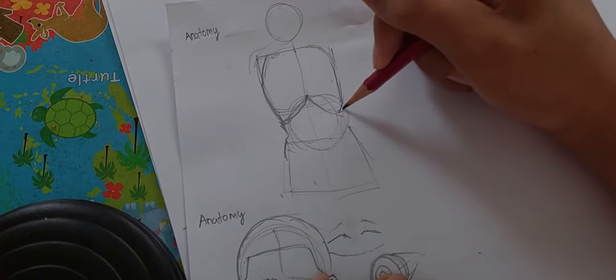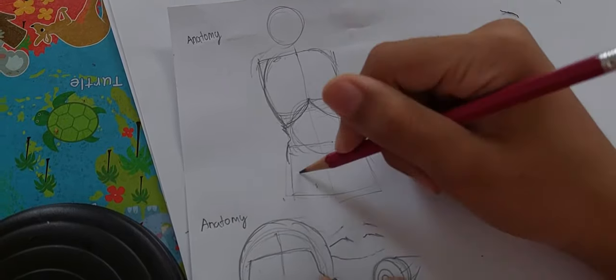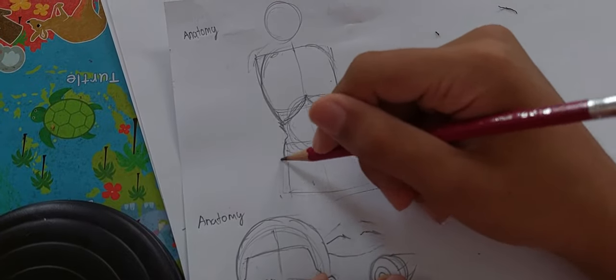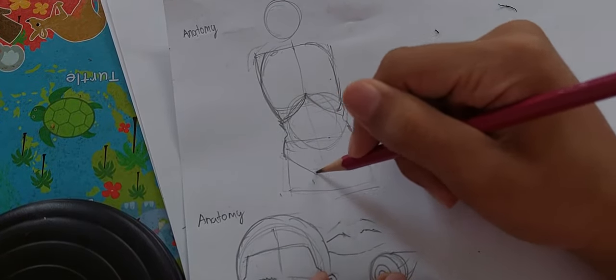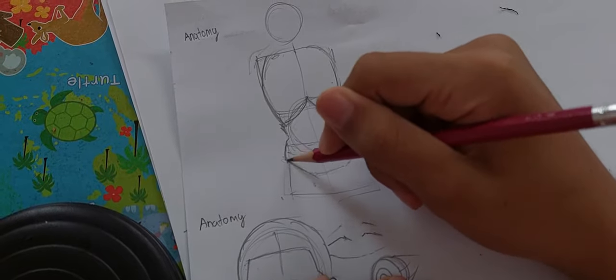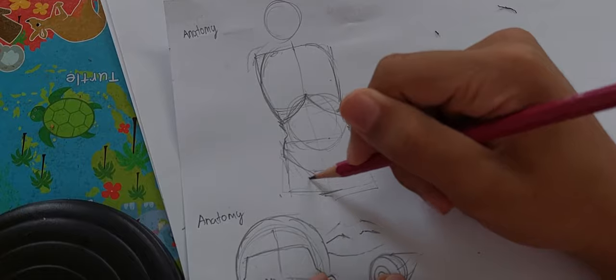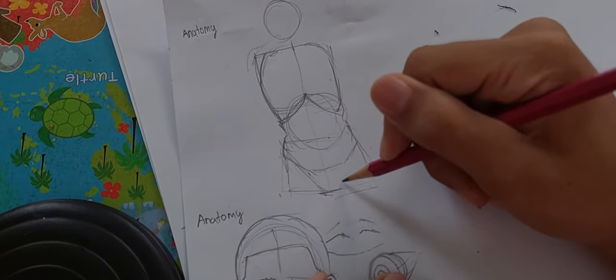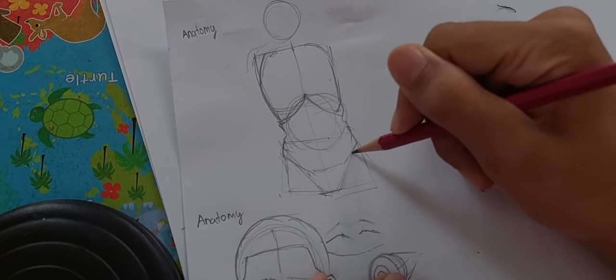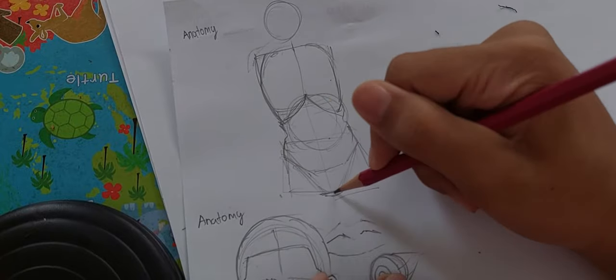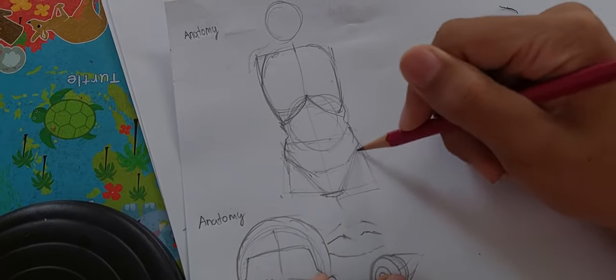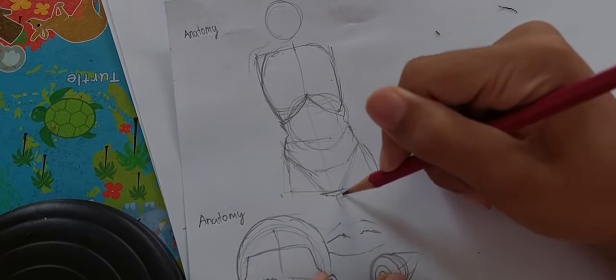This circle thing is gonna be a space between your tummy. And after that, draw kind of, this gonna be your, your things, whatever. I don't know how to call it. And this gonna be your butt.